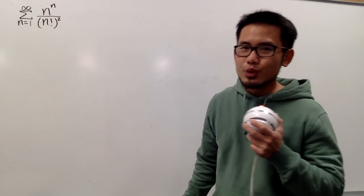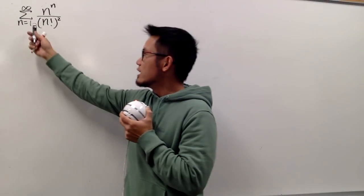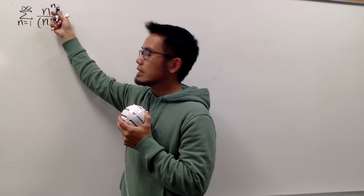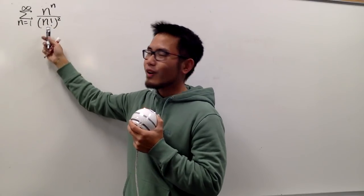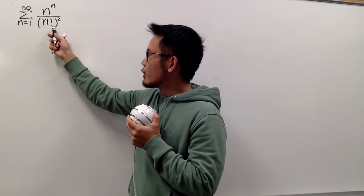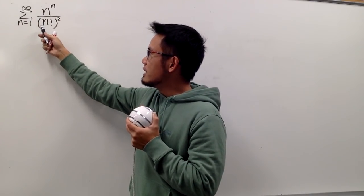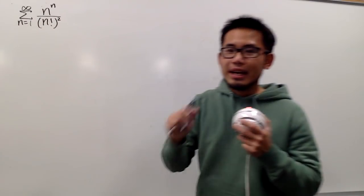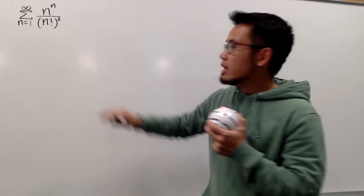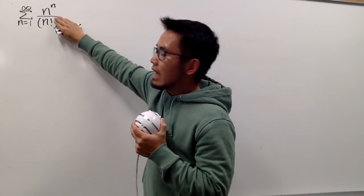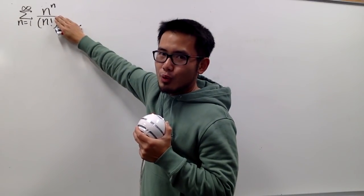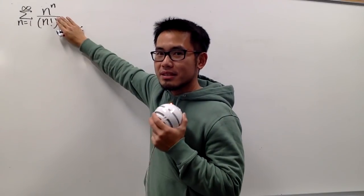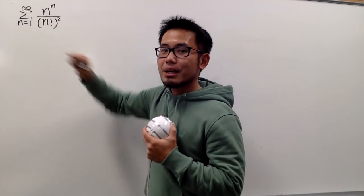Converge or diverge: we have the series as n goes from 1 to infinity of n to the nth power over n factorial, in parentheses, and then to the second power. Imagine if we do not have the second power right here — this is actually pretty easy because it's divergent.